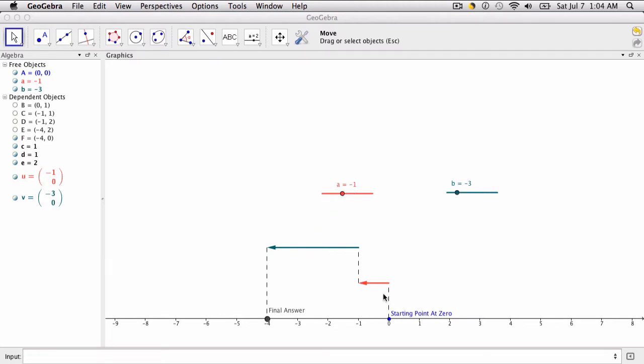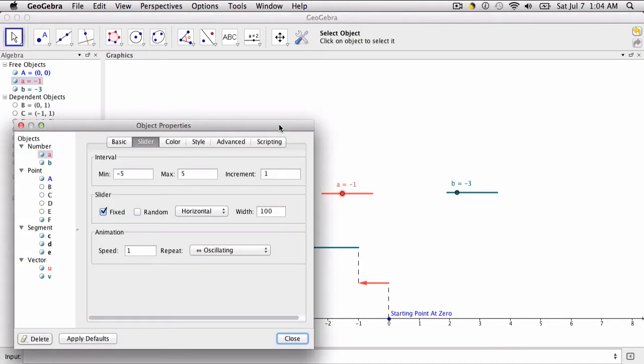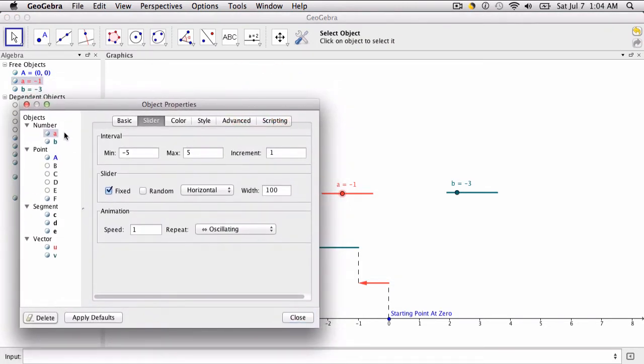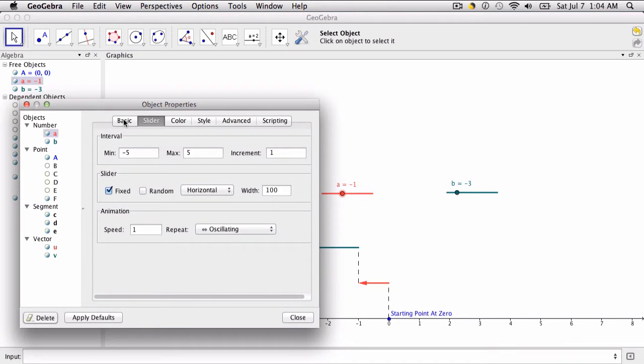I'm going to neaten some of this up. If I open my object properties by hitting CTRL or CMD E, I can do a few things here. So in the sliders, I'm going to get rid of A and B. It's confusing. I'm just going to show the values.